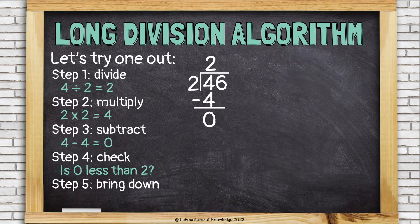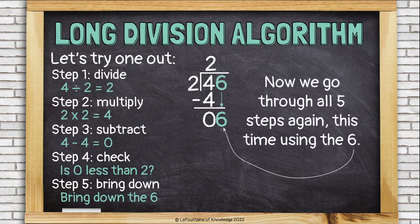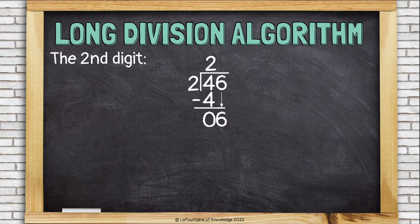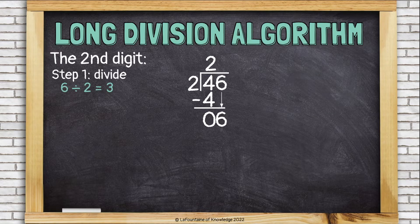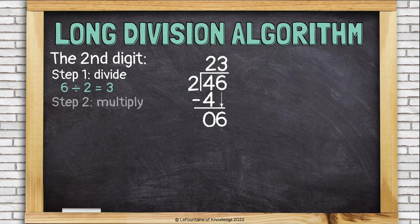Now step five, bring down. This whole time I've been working with that four under the bracket. Now I need to work with the six, so I'm going to bring it down to sit right next to the zero. We go through all five steps again, this time using the six. Step one, divide: six divided by two is three. And remember, every time you divide, the answer goes on top of the bracket.